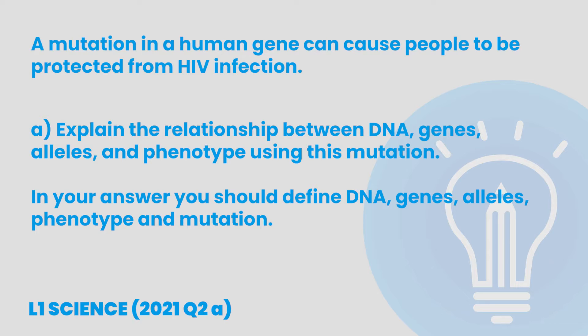Feeling confident about all those definitions and connections? The next step is using them to answer a big fancy exam question. Here's an example from level 1 science: 'A mutation in a human gene can cause people to be protected from HIV infection. Explain the relationship between DNA, genes, alleles and phenotype using this mutation. In your answer you should define DNA, genes, alleles, phenotype and mutation.'